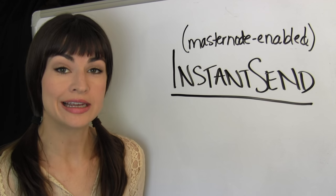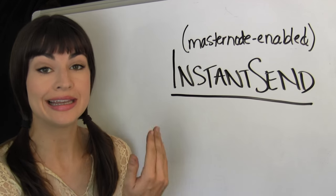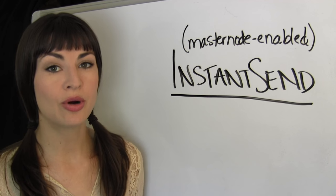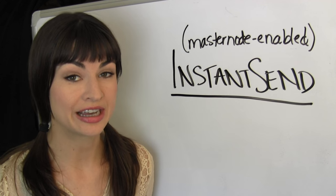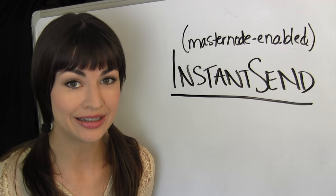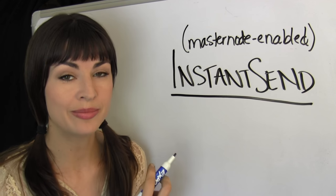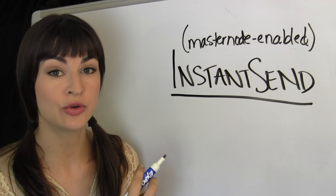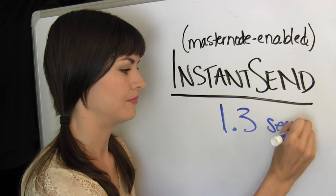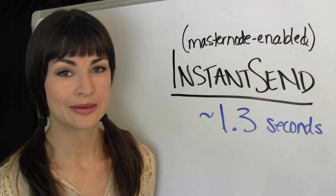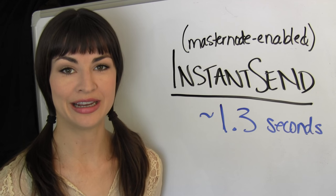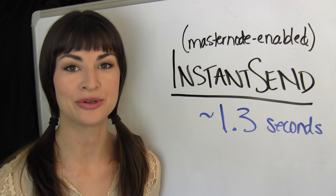And that is why it dashes masternodes enable instant send. So that even though our blockchain's confirmations come about every couple few minutes, a smaller quorum of masternodes can provide you with an irreversible confirmation in about 1.3 seconds. Now that's more the speed of paying for coffee and getting out the door.